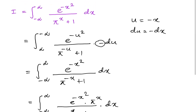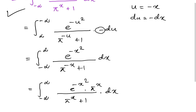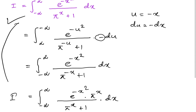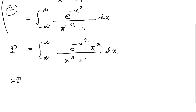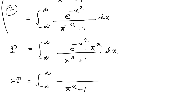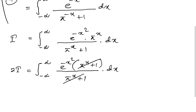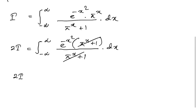We know our original integral equals I, and this new integral also equals I. So we add these two integrals together: 2 times I equals the integral from minus infinity to infinity with common denominator pi to the x plus 1. In the numerator, taking e to the minus x squared as a common factor gives pi to the x plus 1, which cancels with the denominator.